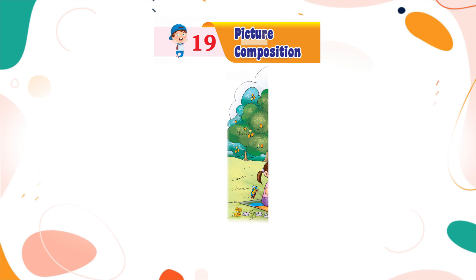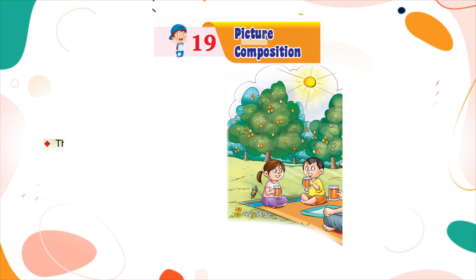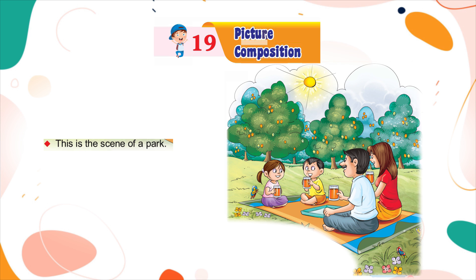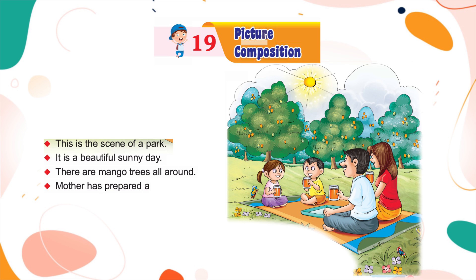Chapter 19: Picture Composition. This is the scene of a park. It is a beautiful sunny day. There are mango trees all around. Mother has prepared a flavoured drink. All are sitting together.